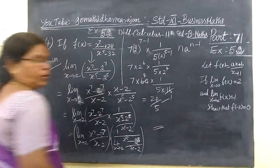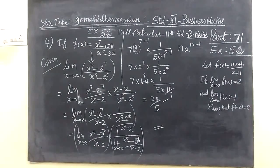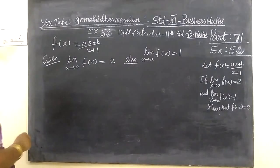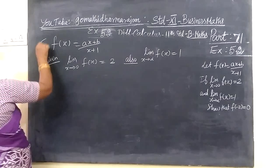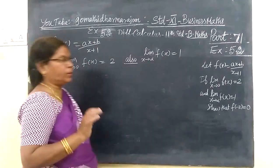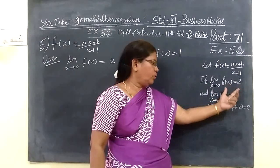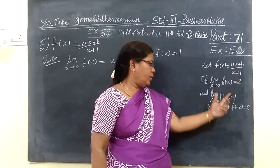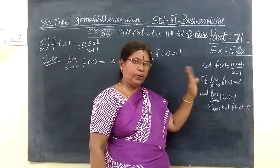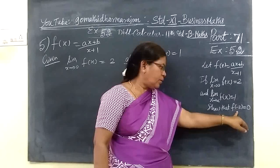So coming to the next question, question number 5. F of x is given with 2 conditions. If limit is equal to 2, find the value of A, and if limit is equal to 1, find the value of B. After finding A and B, this is the question.